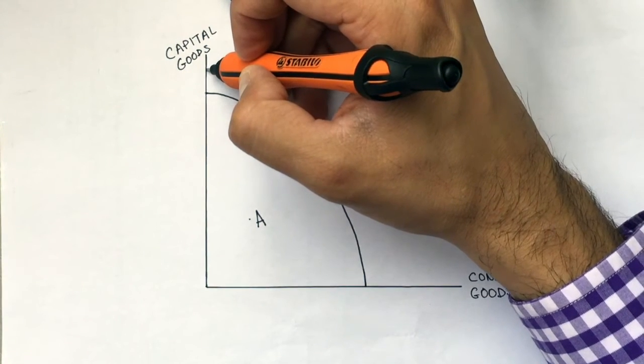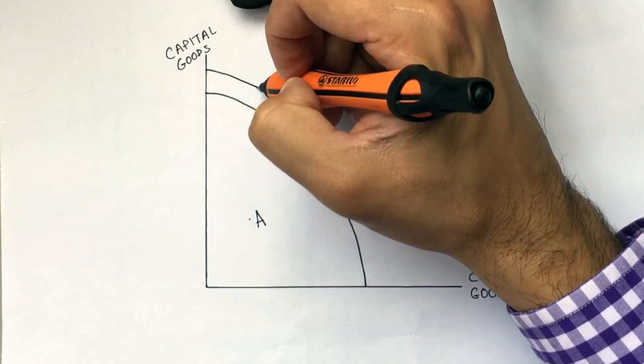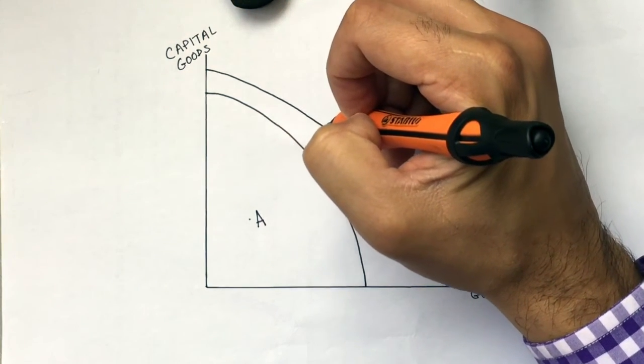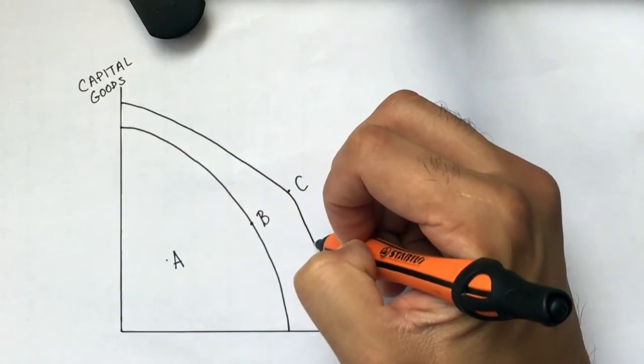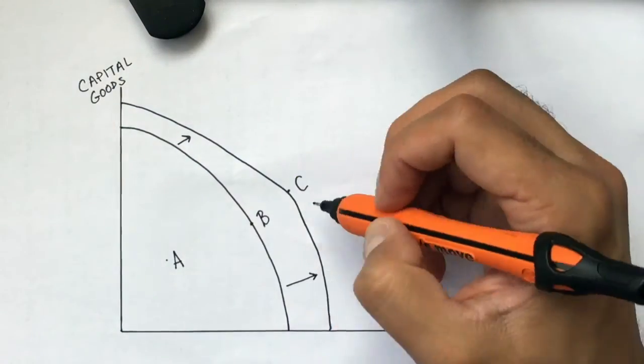Now let's say there is a technological breakthrough that will shift this curve outward, and now you will see we can produce at point C.